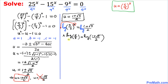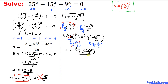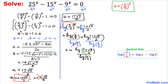To isolate x, we divide both sides by log(5/3). The log(5/3) on the left cancels, leaving x = log((1 + √5)/2) divided by log(5/3). Since we have a ratio of logarithms of fractions, we apply the quotient rule to the numerator: log(1 + √5) minus log 2.